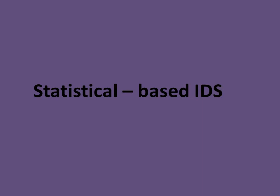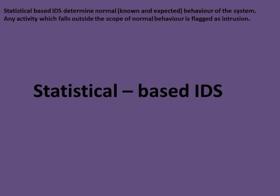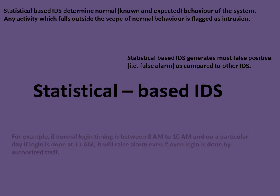Statistical-based IDS notes the normal activity or behavior of the system, and any activity which falls outside the scope of normal behavior is flagged as intrusion. These generate the most false positives, that is false alarms, compared to other IDS systems. For example, if normal login timing is between 8 AM to 10 AM and on a particular day login is done at 11 AM, it will raise the alarm even if the login is done by authorized staff.